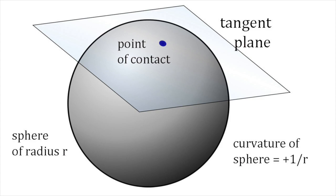Not only does a sphere have positive curvature everywhere, but it also has constant positive curvature, equal in value to plus 1 over r, where r is the sphere's radius.